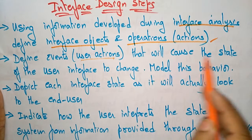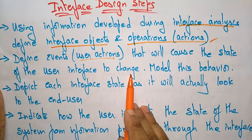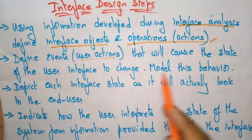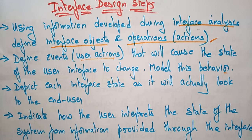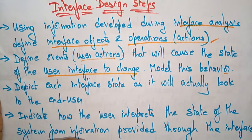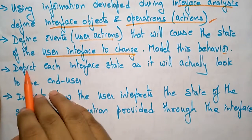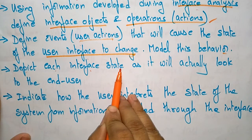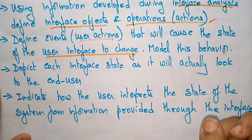The next step is to define events — that is, the user actions that will cause the state of the user interface to change. You have to identify if there is any event that causes the state of the user interface to change.